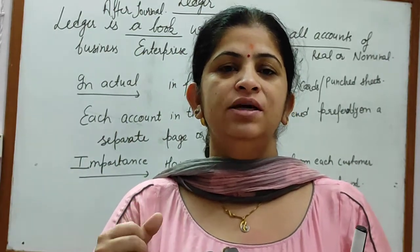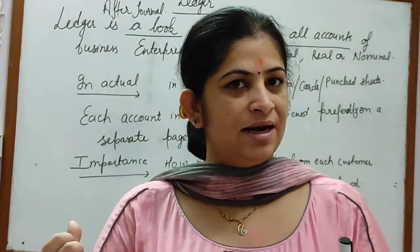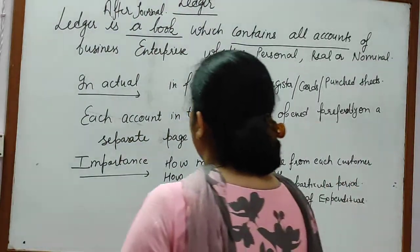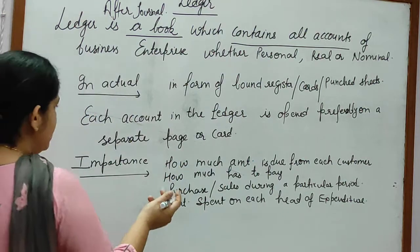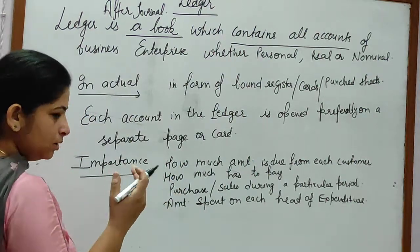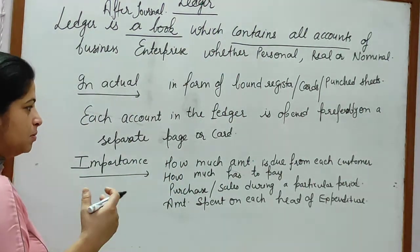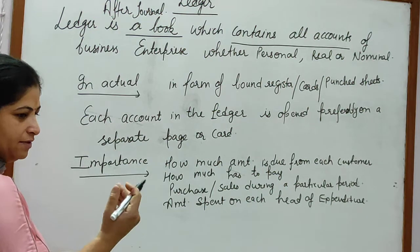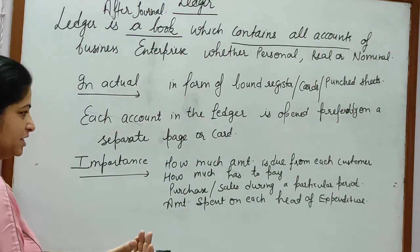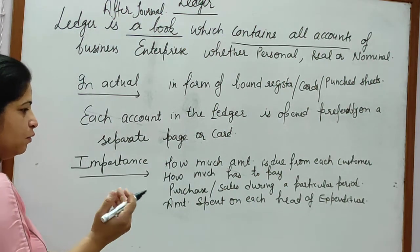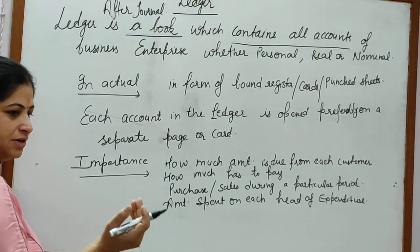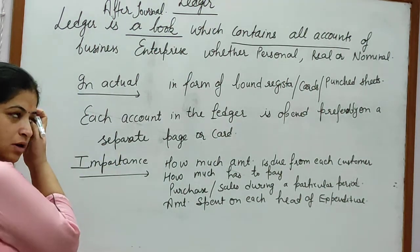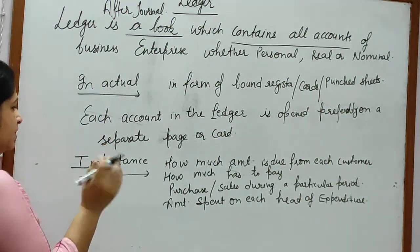From the Ledger, when you balance your Ledger accounts, you will get the knowledge of how much amount is due, how much we have to pay, how much we have to receive, what are the different heads of expenditure, purchases, sales, purchase returns, sale returns, and stock. All this knowledge is provided by the Ledger.